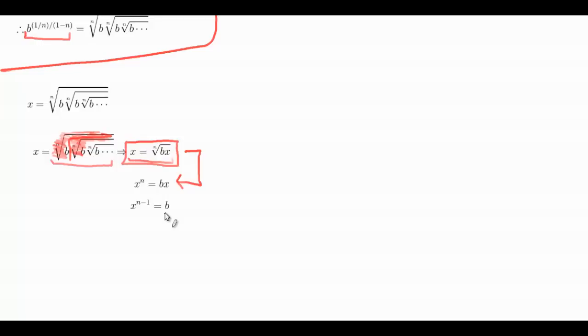Now what we want to do is get x alone, not in any function. You don't want x to be to the nth power minus 1. So we simply take the n minus 1 root of each side over here. So we get x is equal to the n minus 1th root of b. And now that we have the value for x, we get the value for the series that we desired originally.